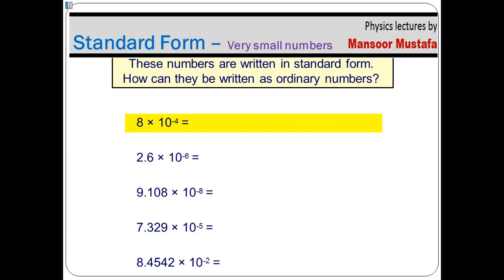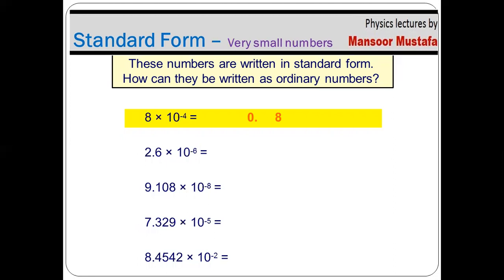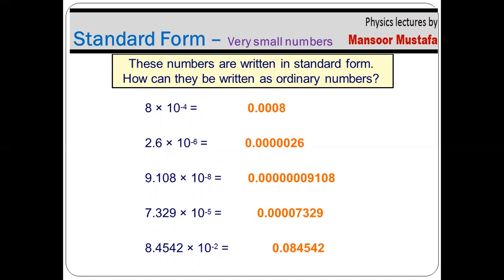Since there is only one digit in the number — which is 8 — and three positions are still remaining, we fill those remaining positions with zeros. So the number is converted into ordinary form. For the rest of the numbers, perform the same exercise. The results are shown here.